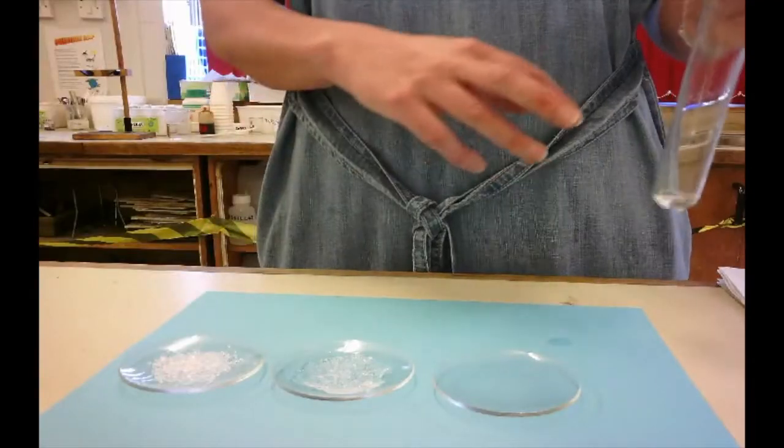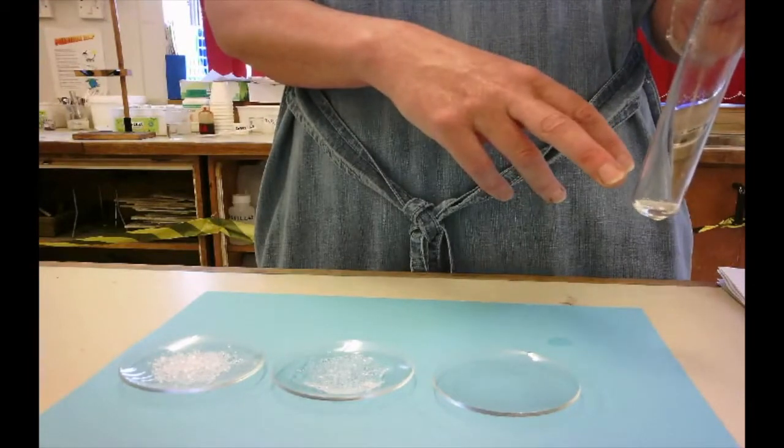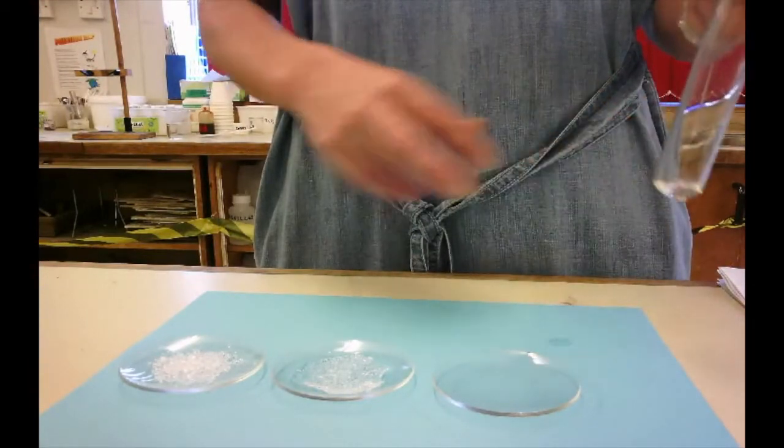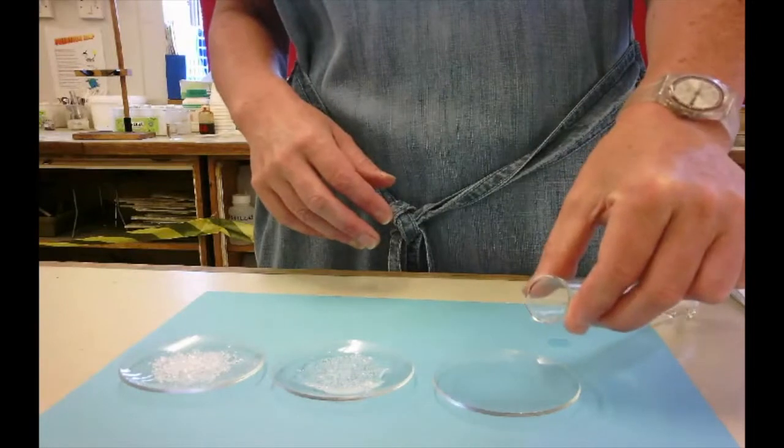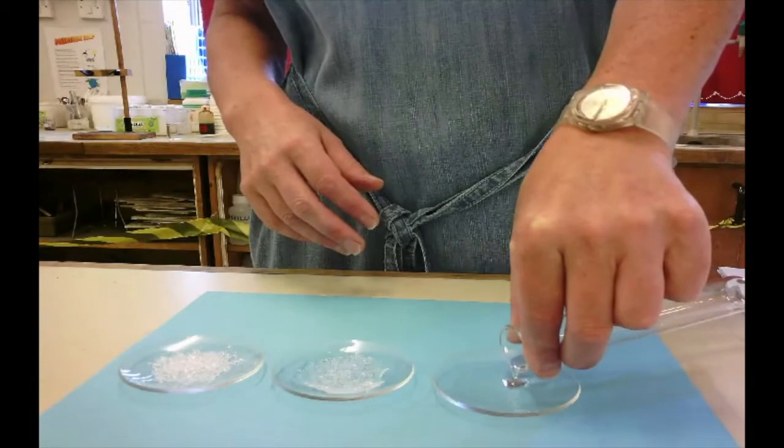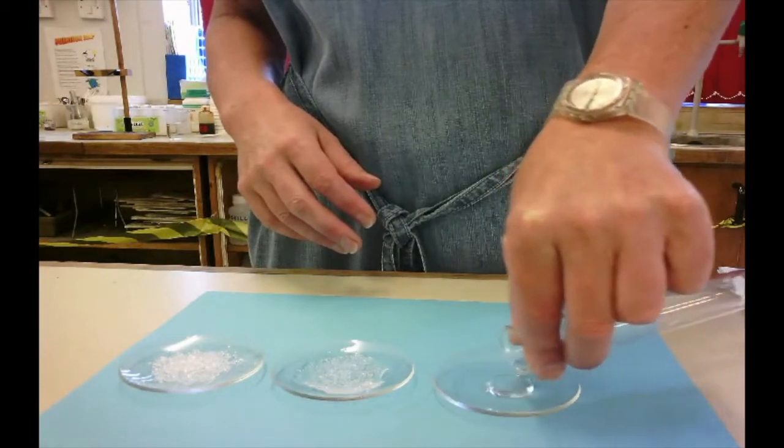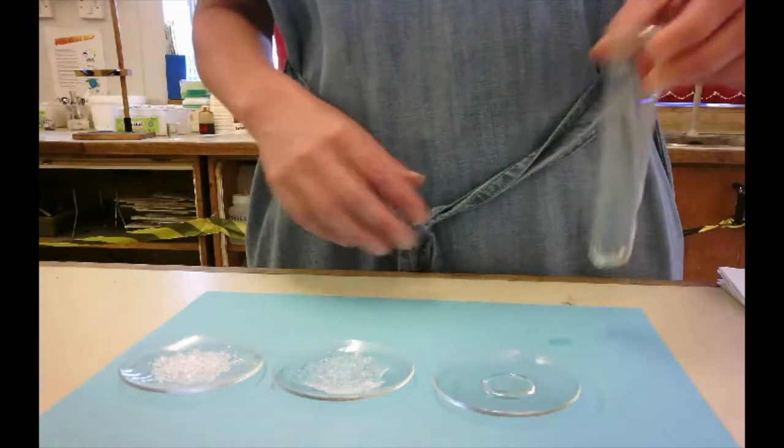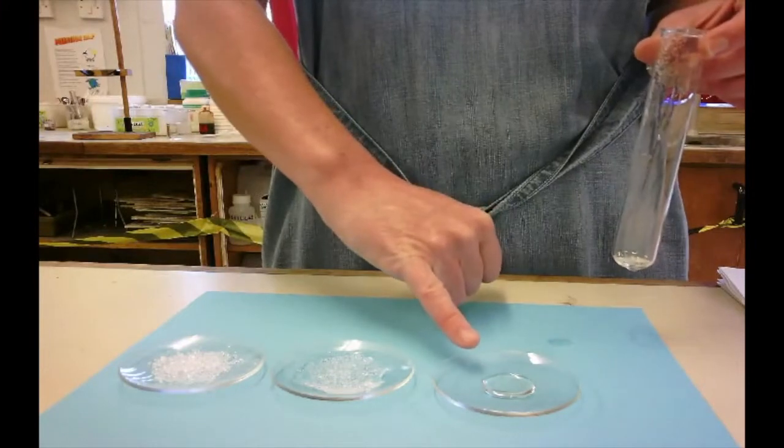So I've taken the melted salol out of the hot water. It's now a colorless liquid, and I'm going to pour a small amount onto the watch glass. What will happen is, because this watch glass is cold, the salol will start to solidify.